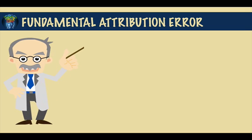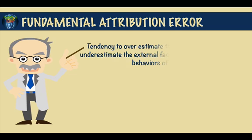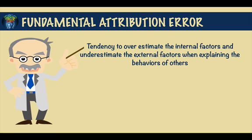First is the fundamental attribution error, which refers to the tendency to overestimate the internal factors and underestimate the external factors when explaining the behaviour of others. So for example, if your friend obtains a bad mark on her assignment, you are likely to attribute this to her lack of intelligence or poor preparation, rather than considering external factors.